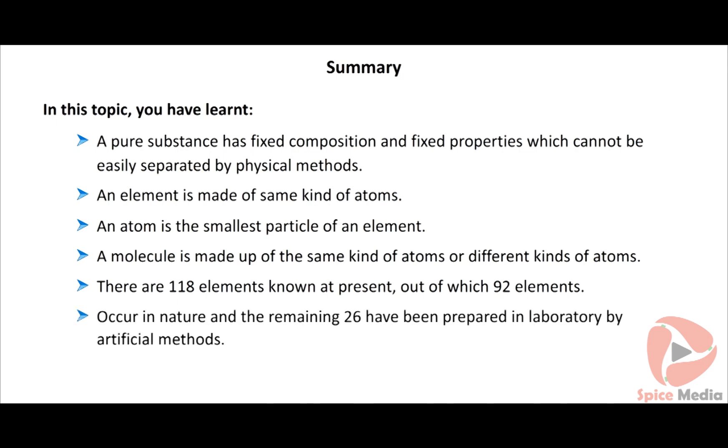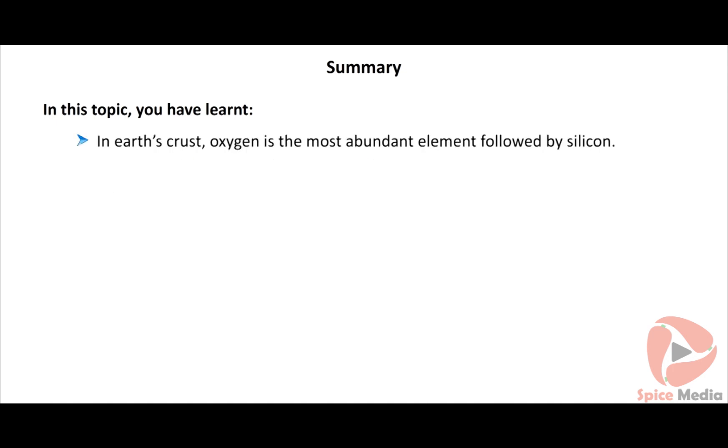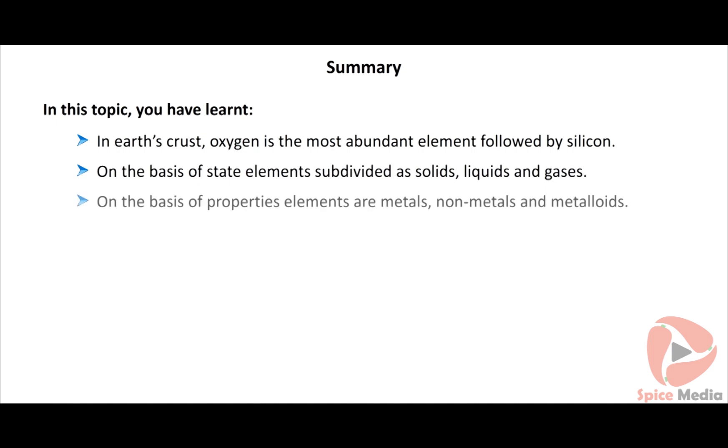In Earth's crust, oxygen is the most abundant element followed by silicon. On the basis of state, elements are subdivided as solids, liquids and gases. On the basis of properties, elements are metals, non-metals and metalloids.